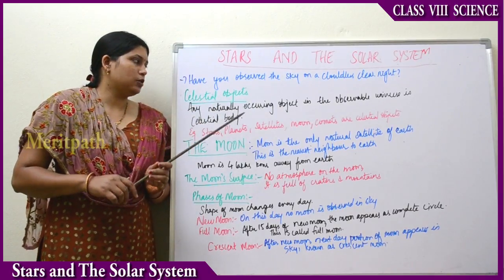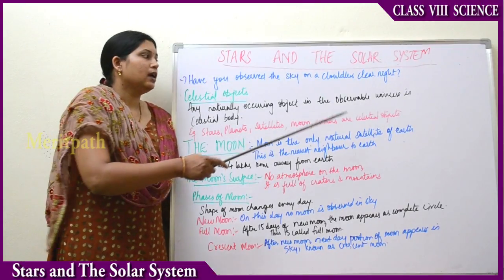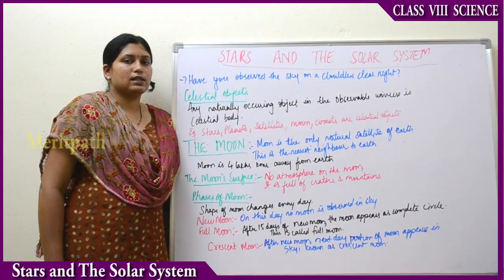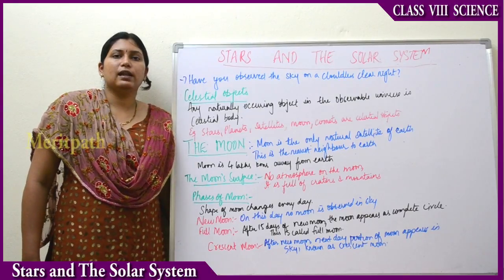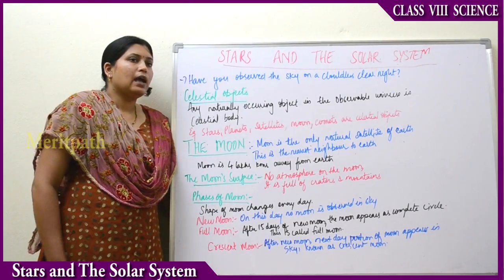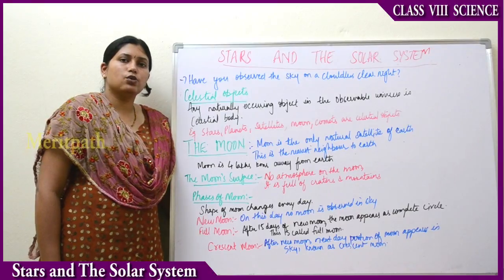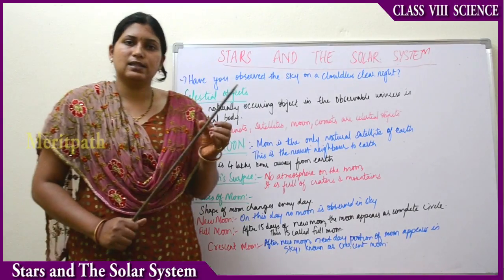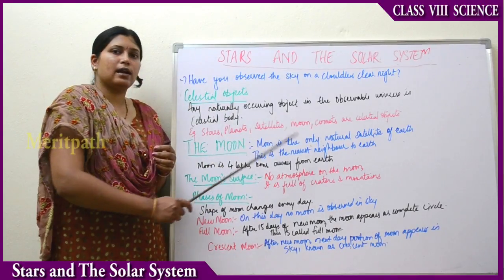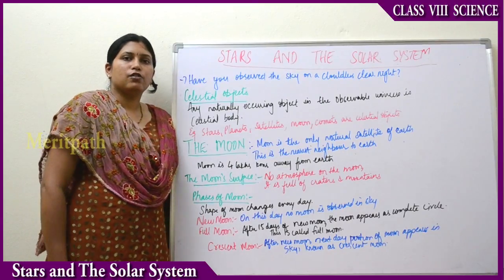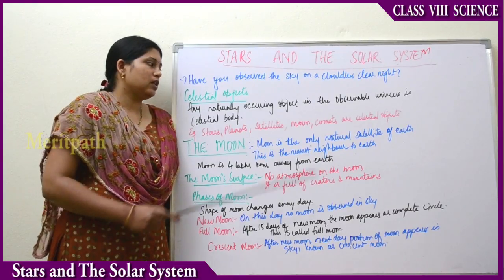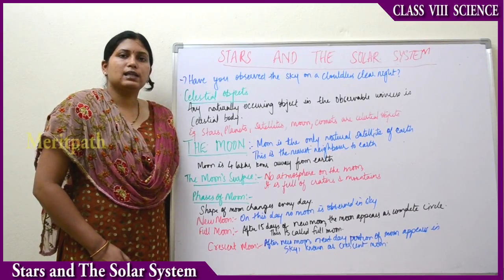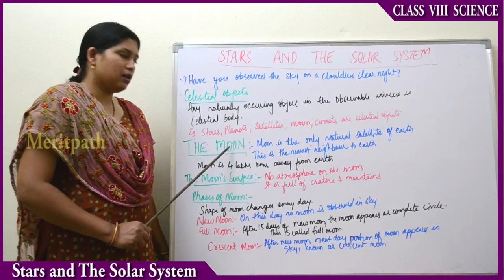All these objects you observe in the night time are known as celestial objects. Any naturally occurring body visible to the naked eye in the sky or in the universe is known as a celestial body. Examples of celestial bodies include stars, moon, planets, and satellites. Satellites launched for navigation and study of the solar system are also sometimes visible through a telescope.